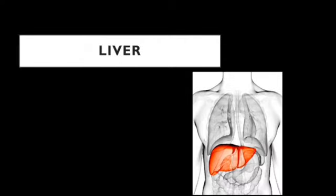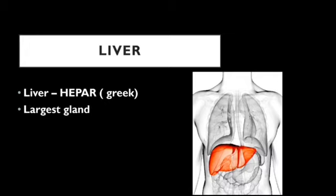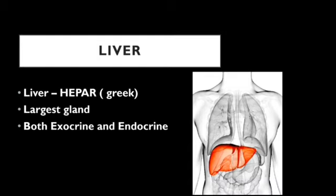Anatomy of the liver. The liver is an important organ of the body and it is the largest gland in our body. It is also given the name hepar, which is a Greek word. That is why the structures related to the liver are given names such as hepatic artery, hepatic duct, hepatic vein, and so on.